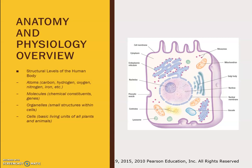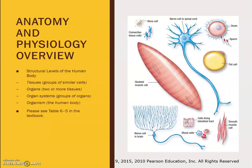Structural levels of the human body include atoms — carbon, hydrogen, oxygen, nitrogen, and iron — then molecules, chemical constituents, and genes. Then we have cells, with other small structures within them, as basic living units of all plants and animals. Above that are tissues, groups of similar cells; organs, two or more tissues; organ systems, groups of organs; and organism, which is the human body. Please see table 6.5 in your textbook.